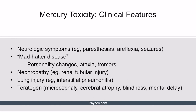Similar to lead and arsenic toxicity, clinical features of mercury toxicity can include nonspecific neurologic symptoms such as paresthesias, areflexia, or seizures. Unlike lead and arsenic, mercury toxicity can lead to a constellation of signs and symptoms commonly referred to as mad hatter disease, characterized by personality changes, ataxia, and tremors. This disease is named as such because mercury toxicity used to be a common affliction among people working in felt processing plants — since felt is used in making hats and affected workers exhibited unusual behaviors, the term mad hatter disease came about. Mercury toxicity can also lead to nephropathy, and if exposure occurred via inhalation, lung injury — most often interstitial pneumonitis — can occur.